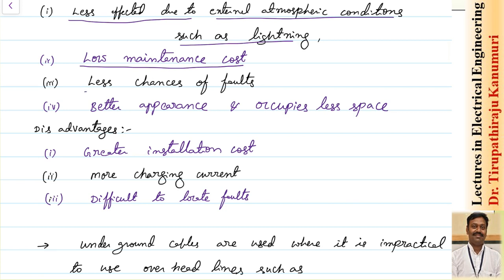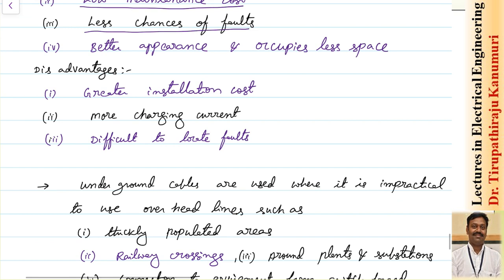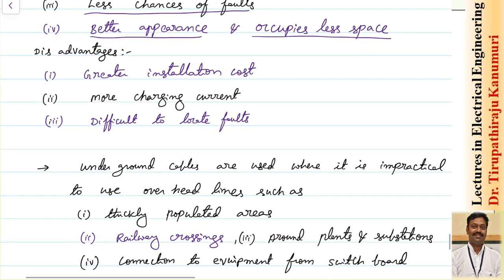There is also a lesser chance of faults. Overhead lines can be cut and fall to the ground, or birds can touch them, causing faults. These problems are not present with cables. Additionally, cables have better appearance and occupy less space.